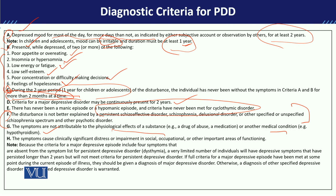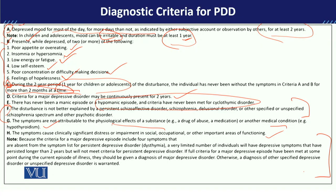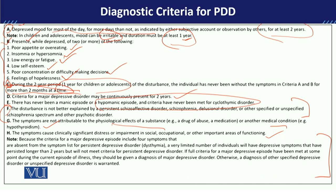The child will report clinically significant distress across different areas of life. An interesting point is that sometimes a child who has had Persistent Depressive Disorder for one year may suddenly enter an acute phase of Major Depressive Disorder. In that case, both diagnoses must be given — you will double diagnose: one, Persistent Depressive Disorder, and two, Major Depressive Disorder.